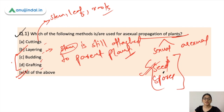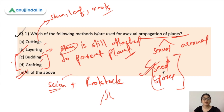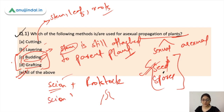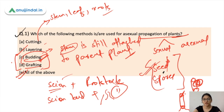In budding and grafting, propagation occurs by connecting two parts of different plants. One part is the scion and the other is the rootstock. In grafting, the rootstock provides the root system while the scion provides the stem, flowers, and branches. In budding, a bud from the scion is taken, a small piece of bark on the rootstock is cut, and the bud is attached to the rootstock. All of these methods are asexual methods of plant propagation.